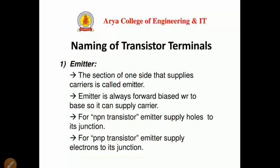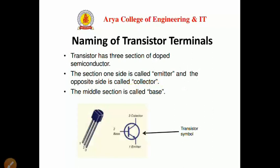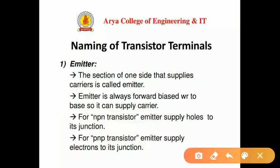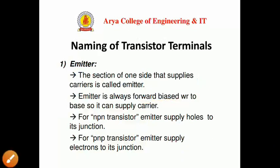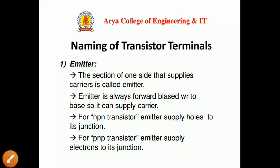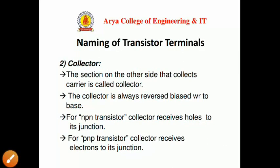The first terminal is the emitter. The section on one side that supplies carriers is called the emitter. The emitter is always forward biased with respect to the base so it can supply carriers. For NPN, the emitter supplies electrons to the junction, and for PNP, the emitter supplies holes to its junction.